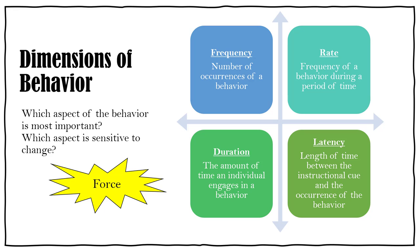Here are some dimensions of behavior — I'm going to briefly talk about five of them. First is frequency: the number of occurrences of a behavior, like the number of times a kid raises their hand. Rate is the frequency of a behavior during a period of time — for example, number of math problems completed per minute or correct spelling words per minute. One key difference between frequency and rate has to do with the amount of time you observe: if you observe for the same amount of time, you can use frequency; if you observe for different amounts of time, you want to use rate.